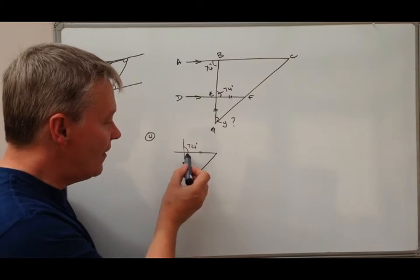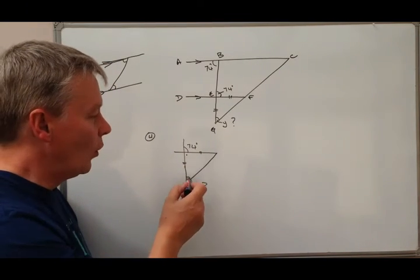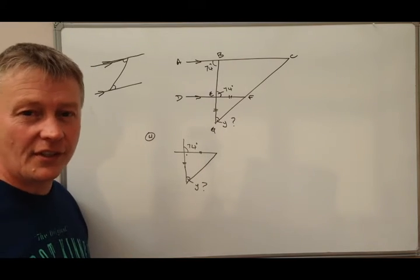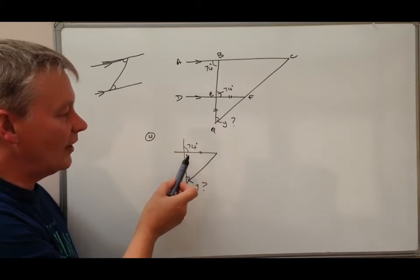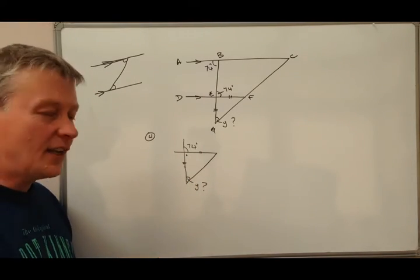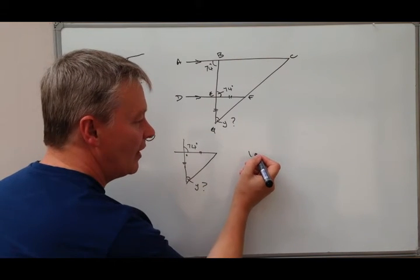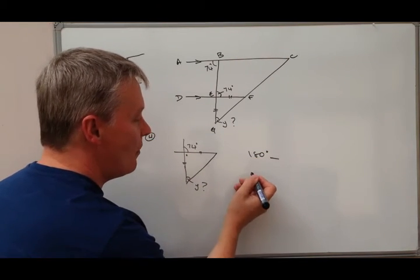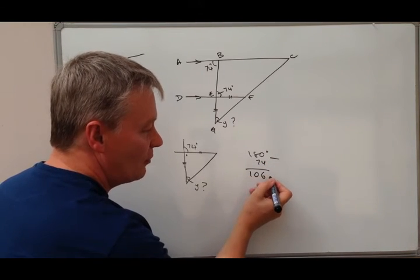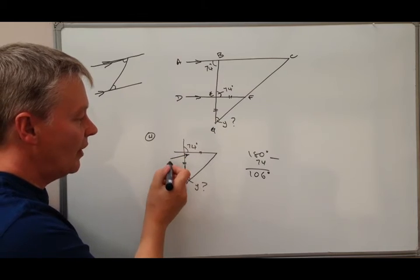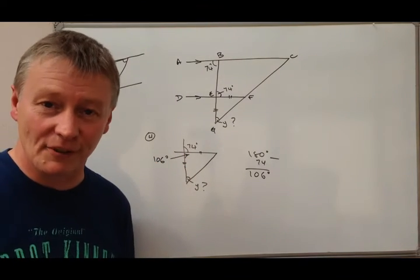The way I can work this angle at the top out is that it's a straight line, so therefore it must be 180 degrees minus 74. So actually the top of this particular triangle must be 106 degrees. We're now getting a little bit further forward with this particular question.